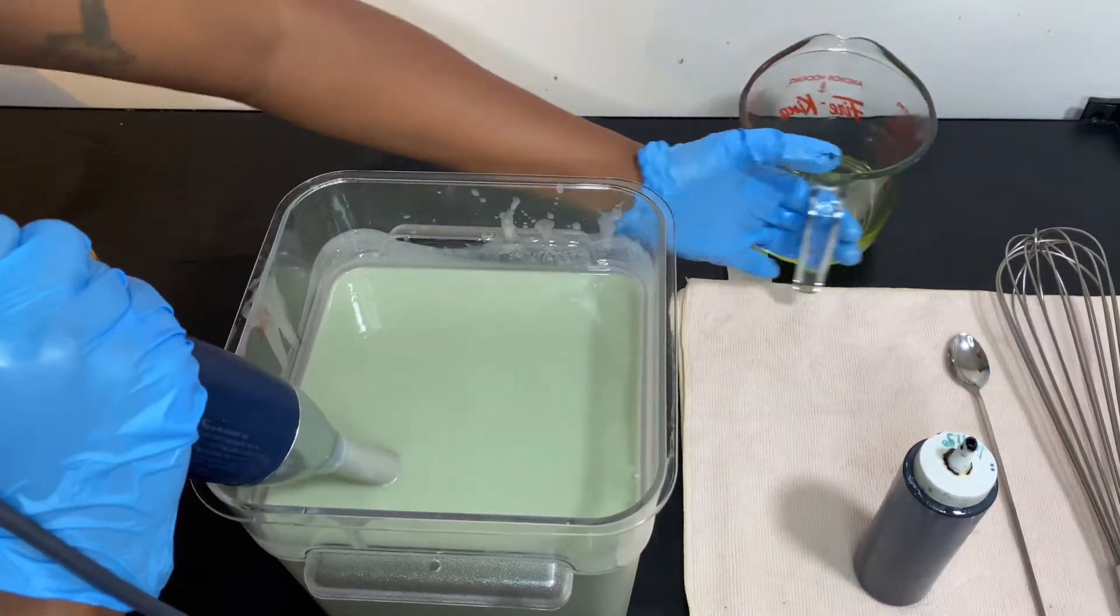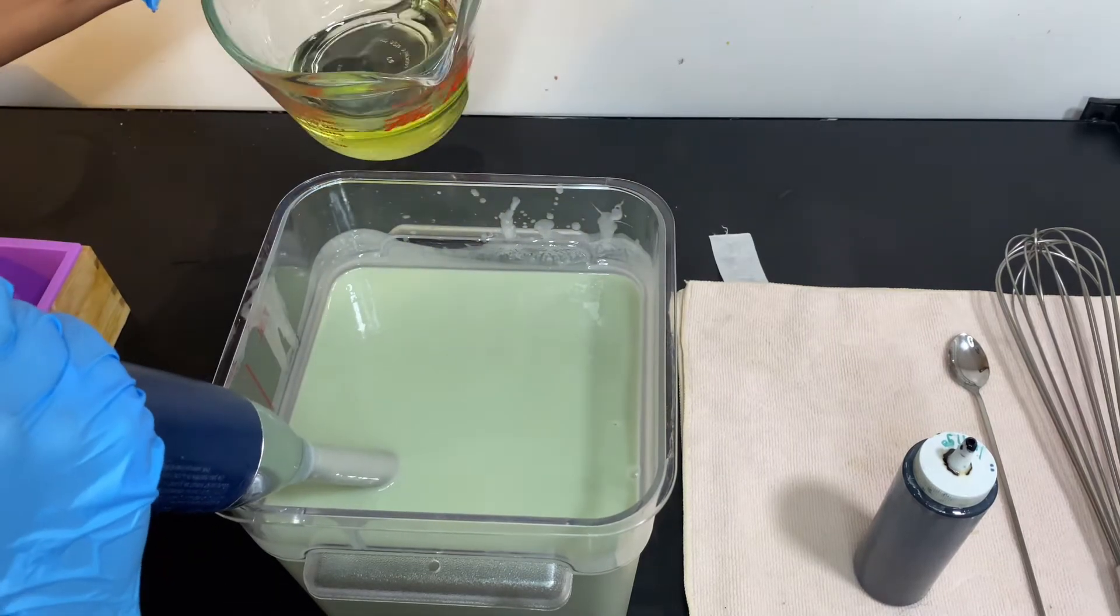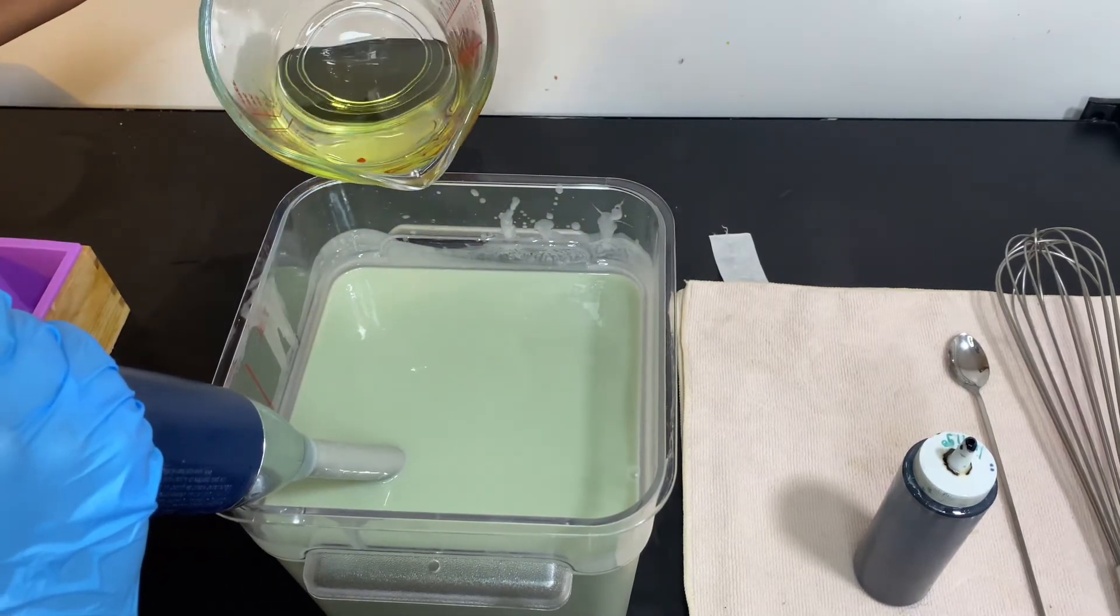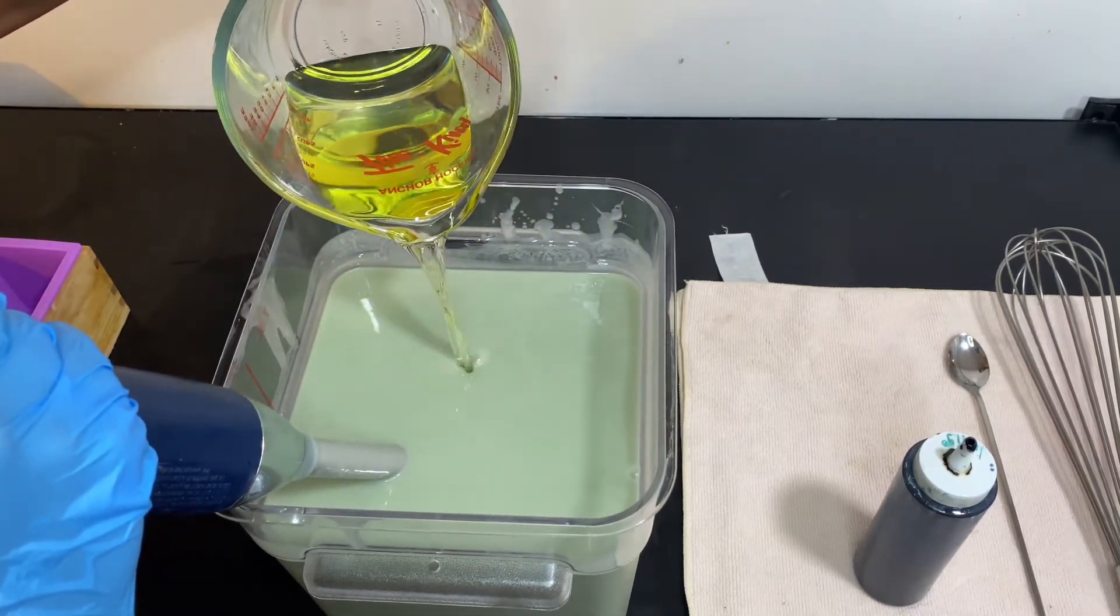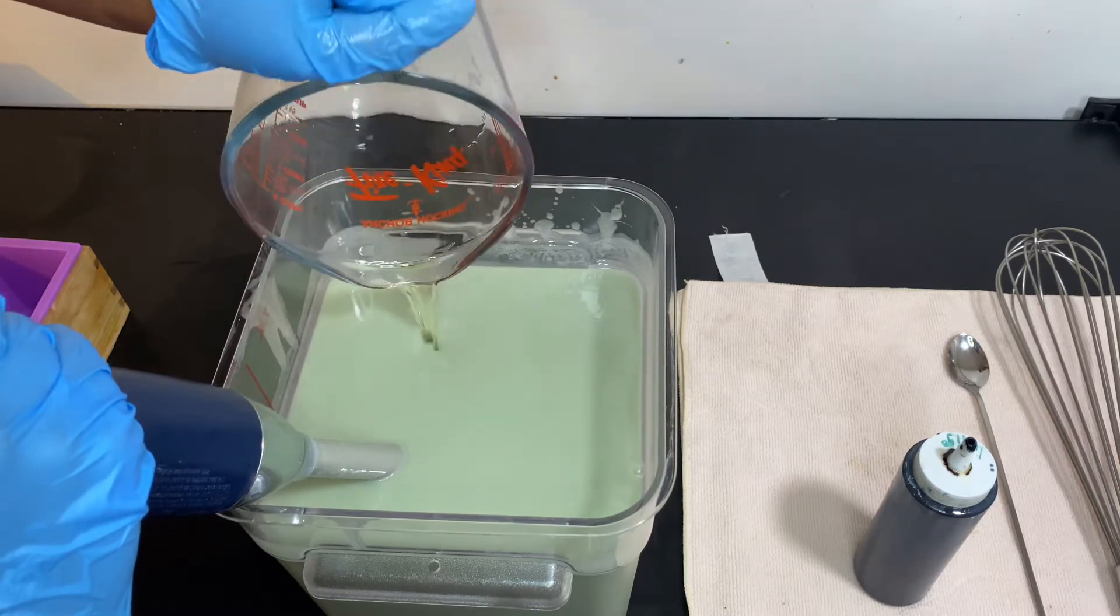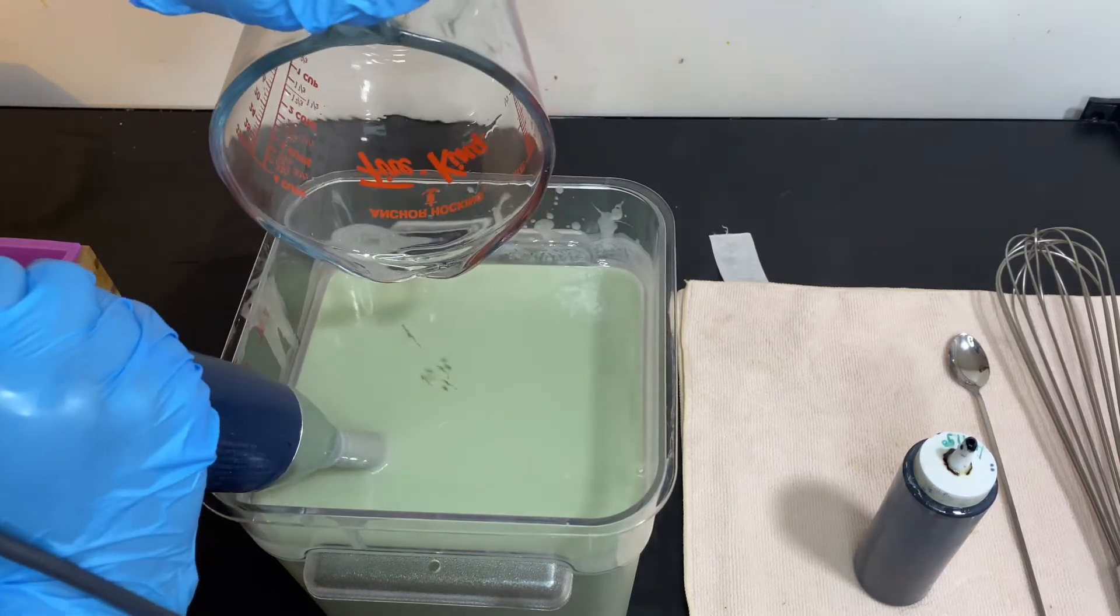All right, so all of our color is in and now we're going to go in with a fragrance oil. We're going to pour this fragrance oil in and then we're going to stick blend for a little bit, and we're going to pour into our soap molds.